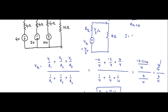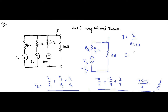I will be VTH divided by (RTH plus 10), which is (4/3) divided by (4/3 plus 10). Calculating this, it comes to approximately 0.12 ampere. So this is the value of the current I.